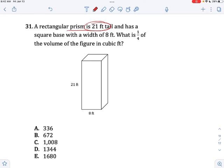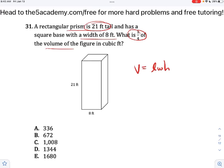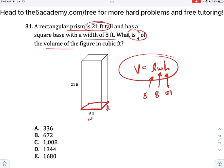Rectangular prism is 21 feet tall and has a square base with a width of 8 feet. What is one quarter of the volume? So with any rectangular prism or cube problem, remember this formula: Volume is equal to length times width times height. You just multiply them together. So our height we know is 21 feet because it's 21 feet tall. Width is going to be 8. And since this is a square base, the width and the length are going to be the same value. They're both going to be 8. So if you do 8 times 8 times 21, you end up getting 1344. You divide that by 4 and you end up getting your answer of 336.